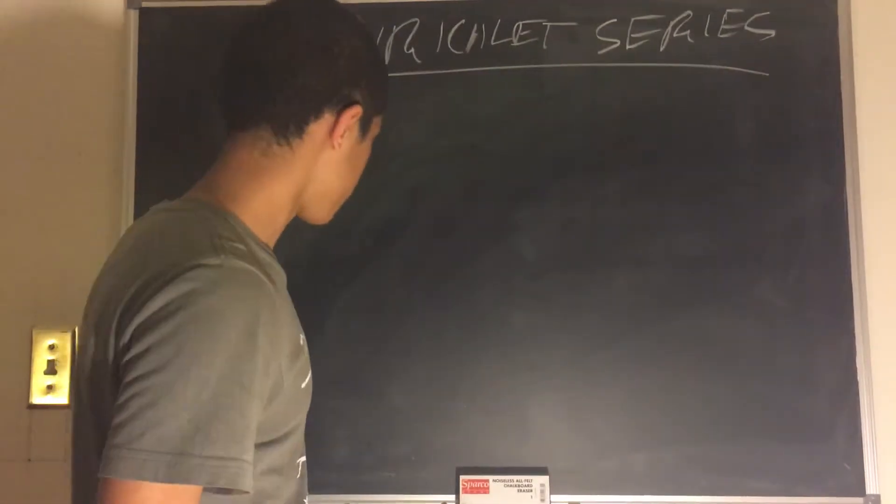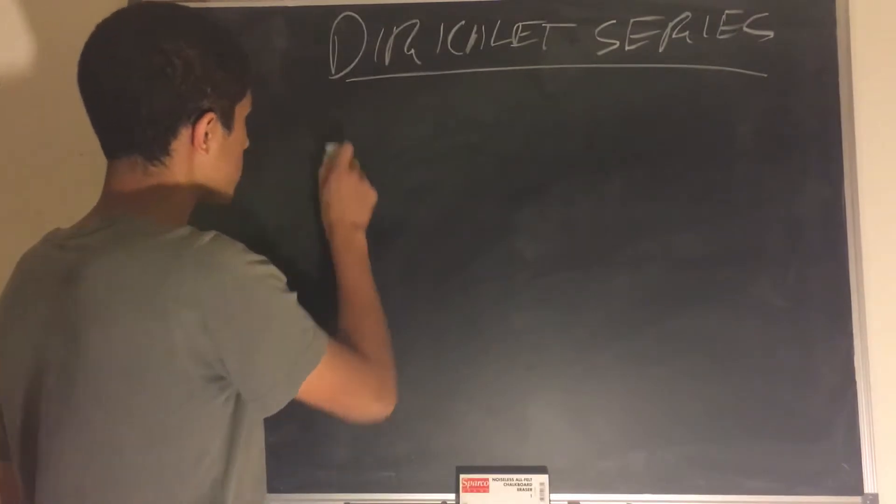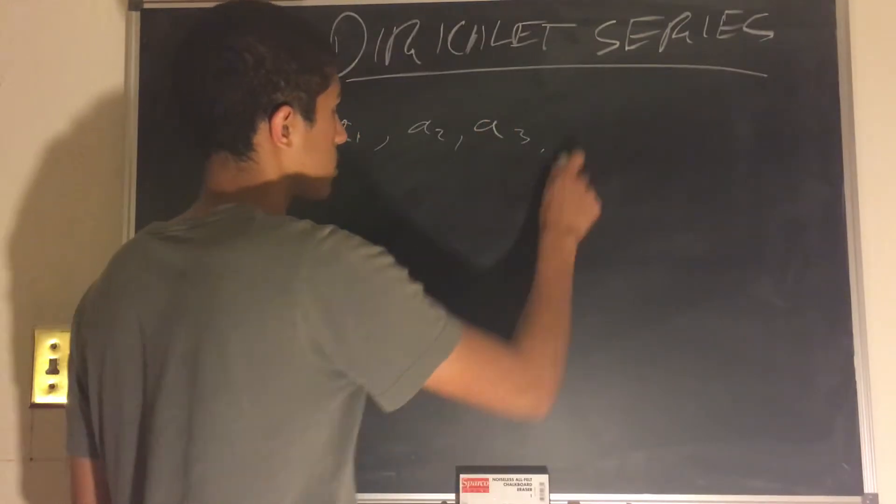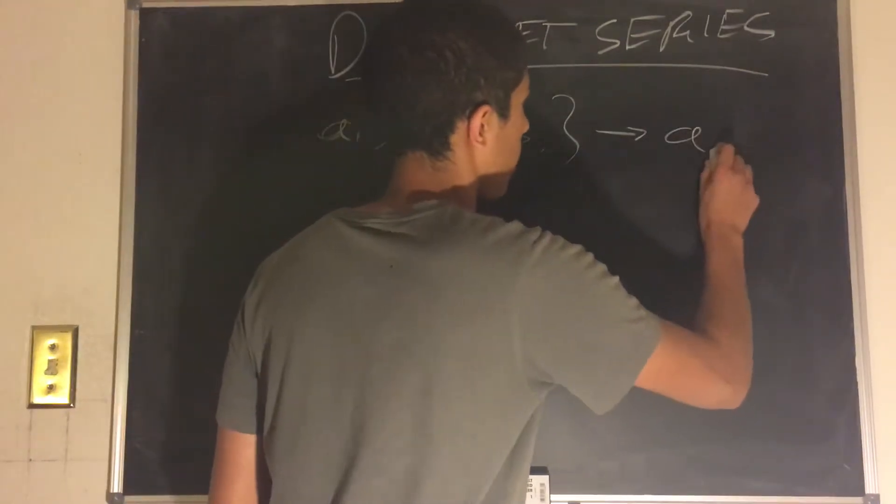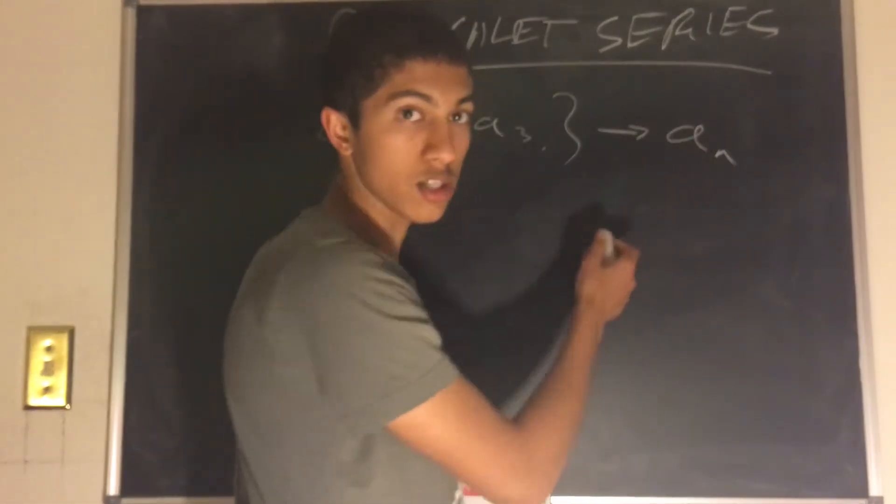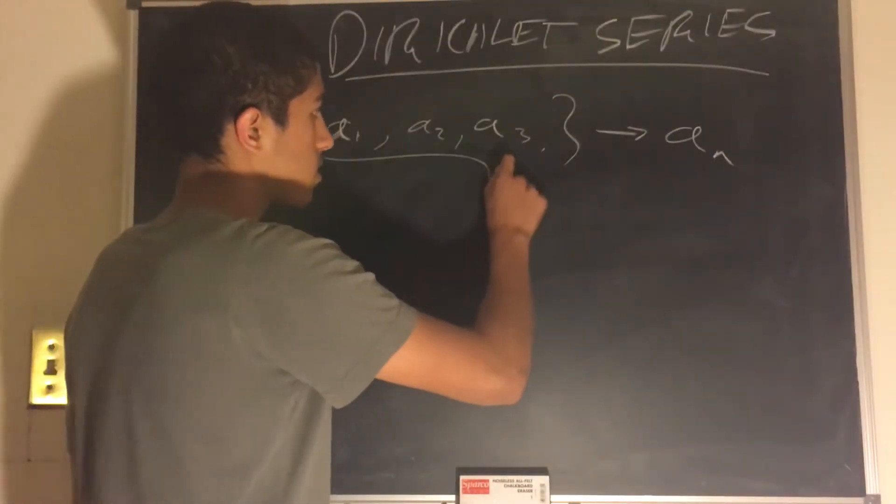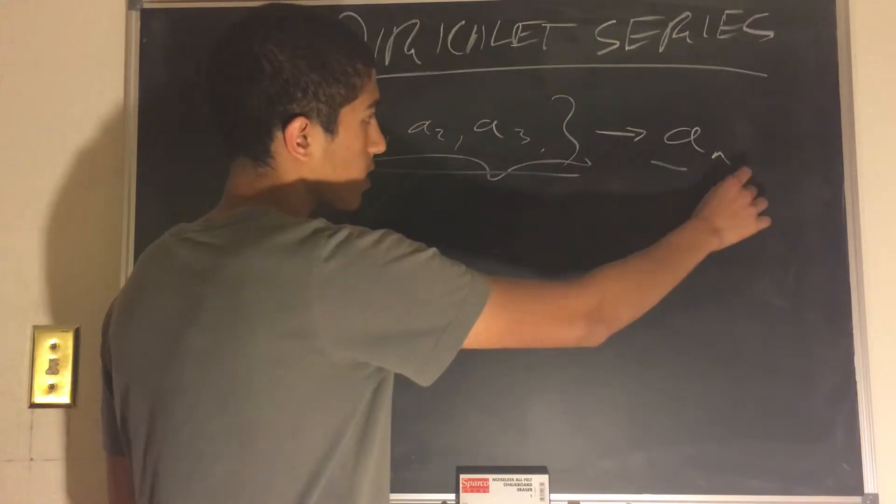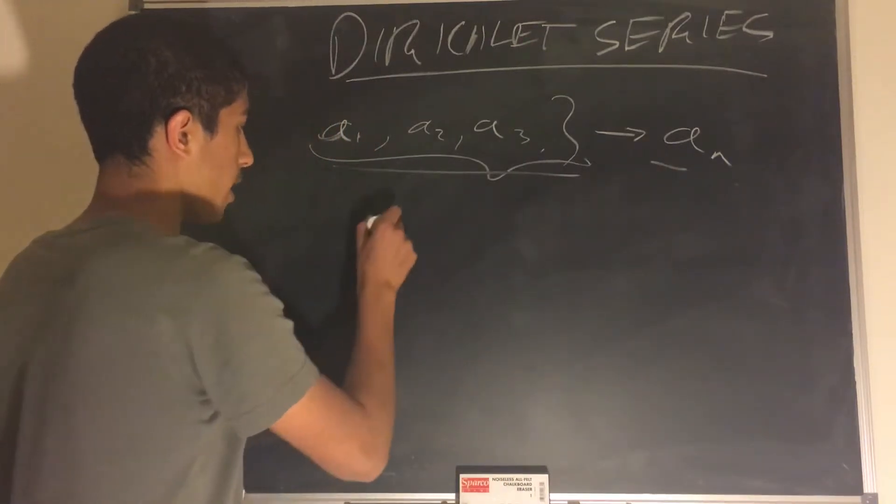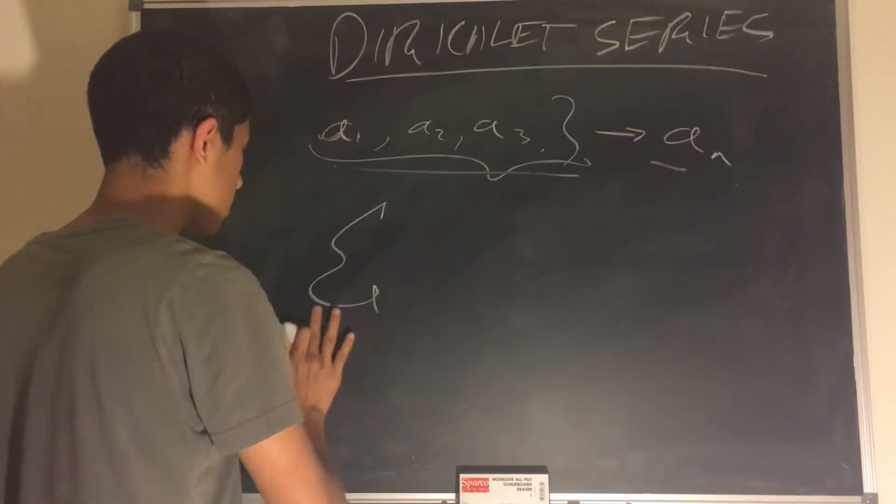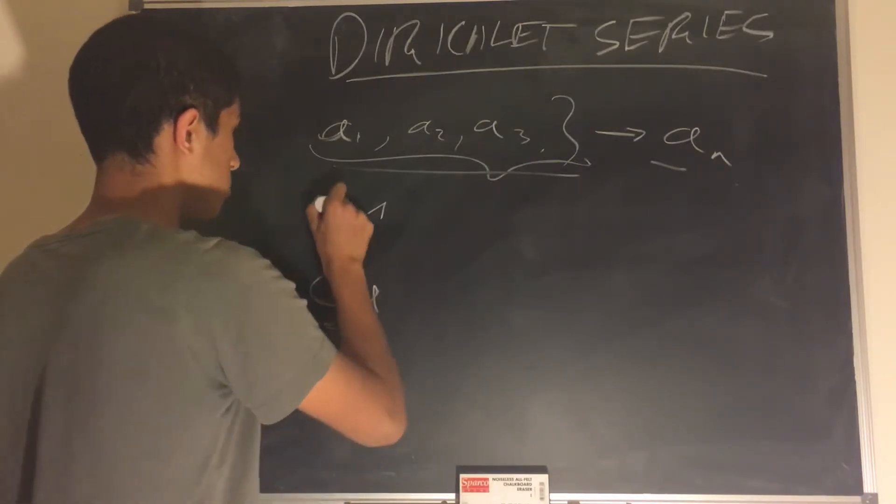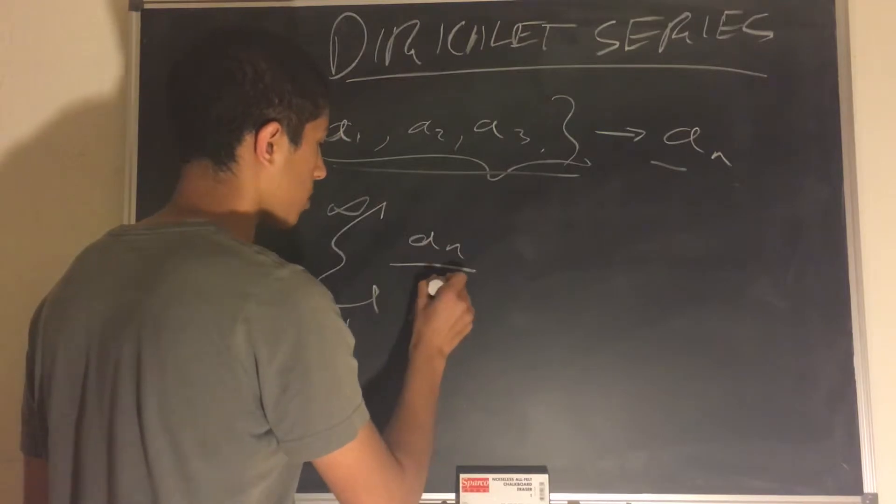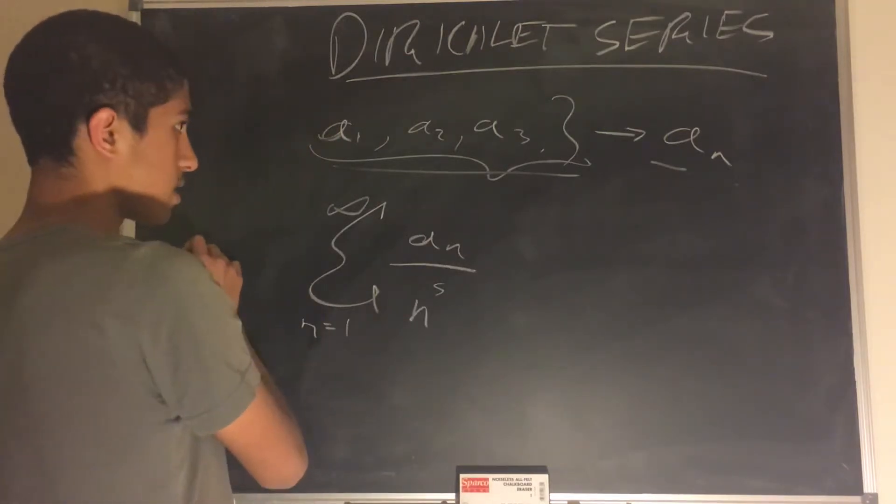So what is a Dirichlet series? Let's say we have a sequence: a1, a2, a3, and let's just say this is an. So an is the generating function for this series here. And the Dirichlet series of this sequence, or this function which generates this sequence, is given by the sum, the infinite sum from n equals 1 to infinity of a sub n divided by n to the power of s, where this is a function of s.